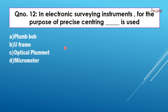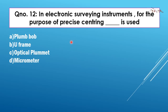In electronic surveying instruments, for the purpose of precise centering, we use the optical plummet. Optical plummet is used for precise centering of our instruments.